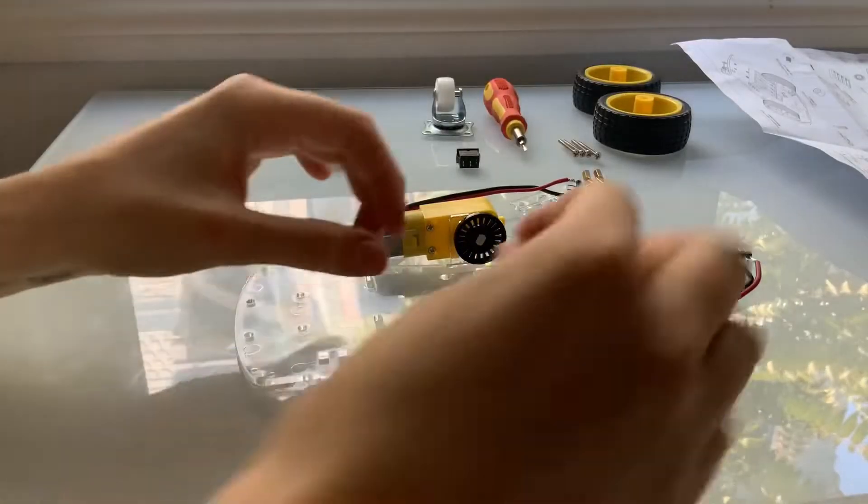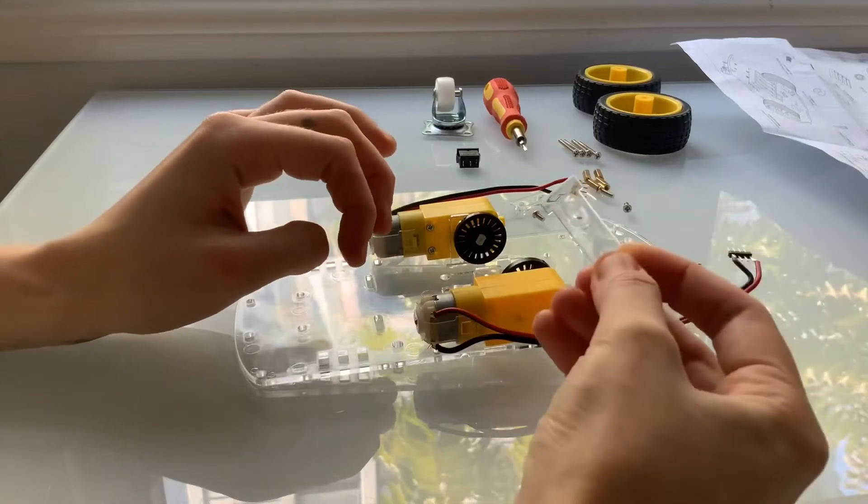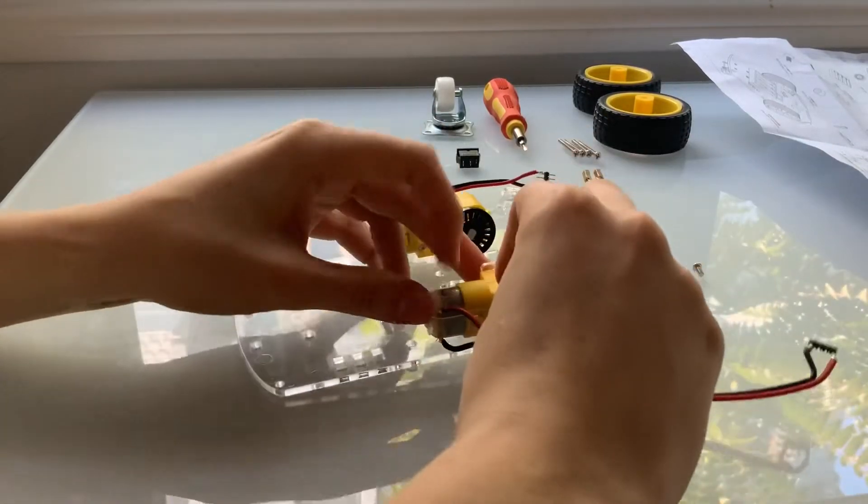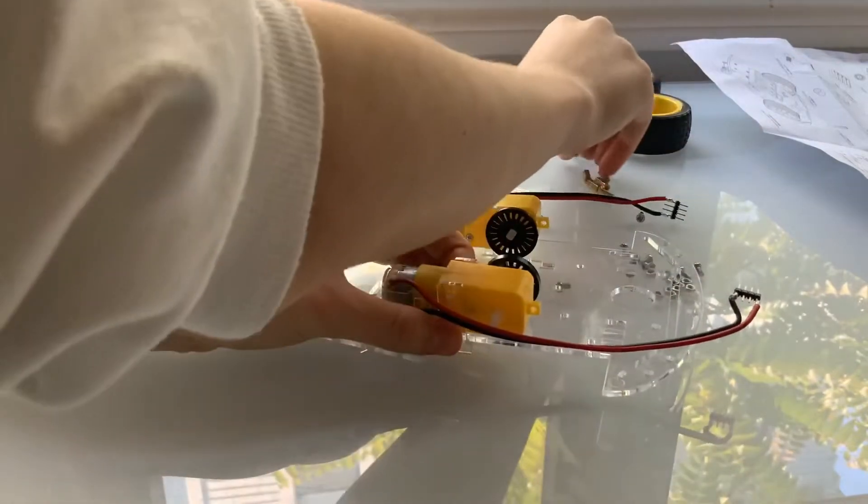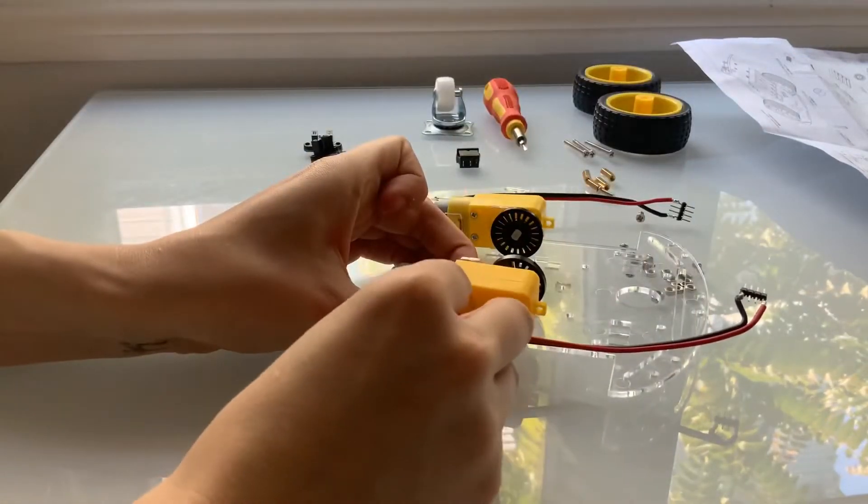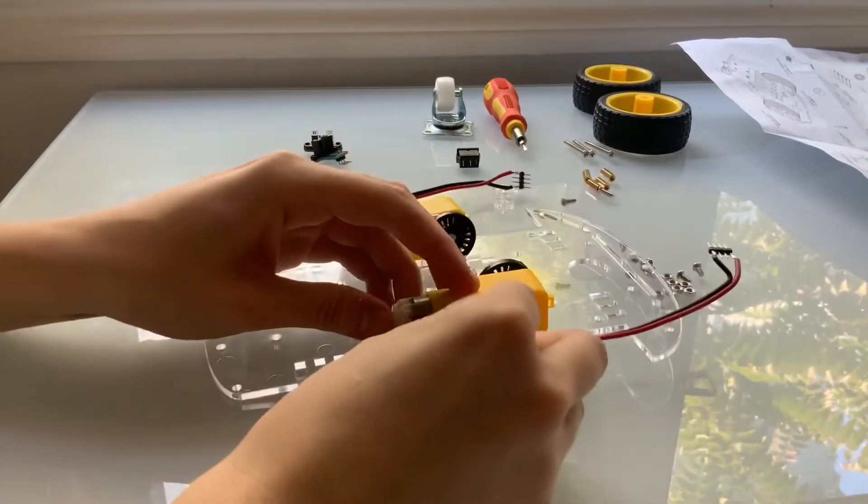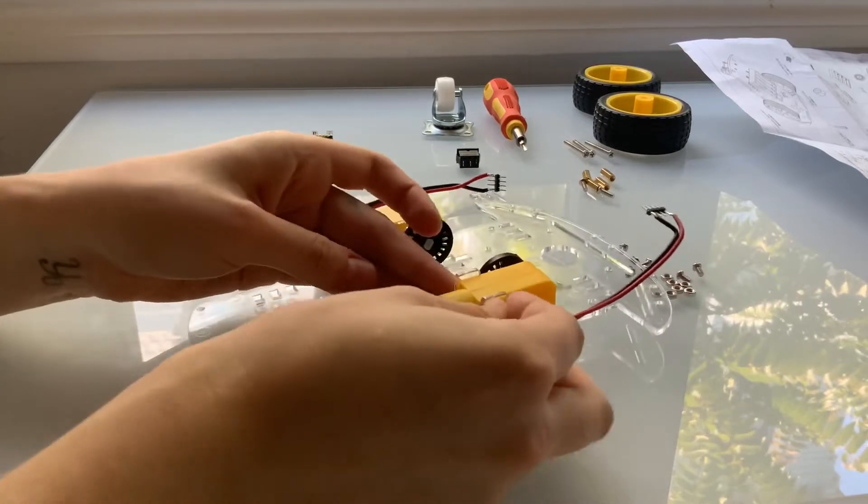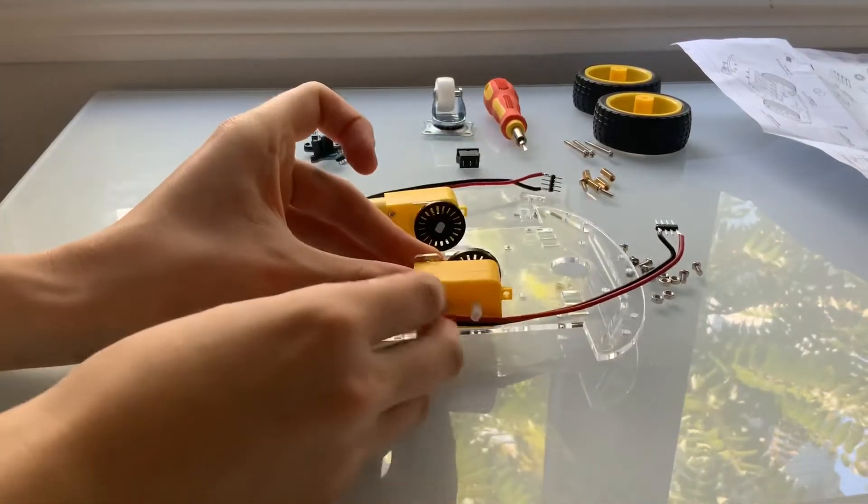Next we'll attach the other fastener. There should be a small notch on the side of the car body. Put the fastener in that notch and hold it in place. Grab a long screw, slide it through the hole at the top of the fastener. It should go through both fasteners and the motor body, then grab one of the nuts and attach it on the other side.